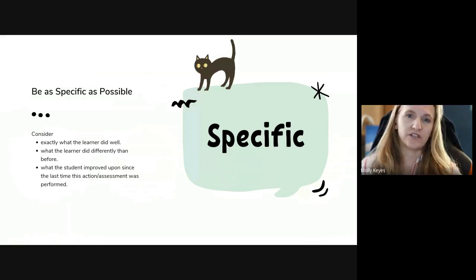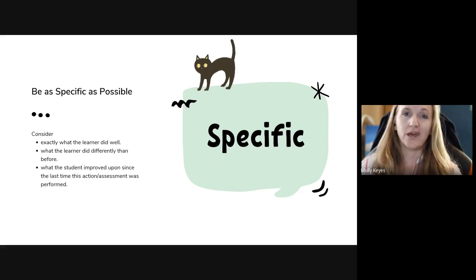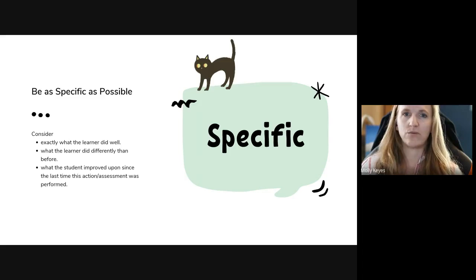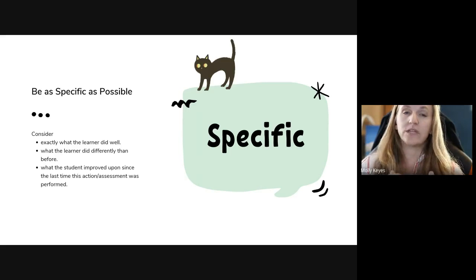When we're trying to be as specific as possible, consider a few different things. Consider exactly what the learner did well. If you're in a situation where you're providing feedback, really think about what was it that that student did that was so great. I know I'm guilty of having a classroom discussion and saying 'great job, Jimmy' and moving right on without actually noting what Jimmy did that was so great. Stopping and thinking, what did he do that was really wonderful? What did he do differently today than he did before? What growth do I see since last time?